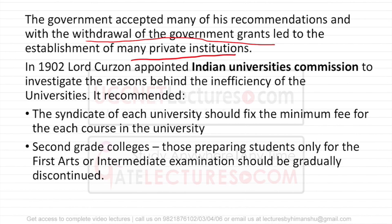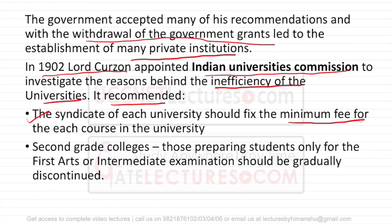In 1902, Lord Curzon appointed the Indian Universities Commission because he was not satisfied with the working of universities — the reason was to improve their efficiency. This commission recommended that the syndicate of each university should fix minimum fees for each course, so fees would be standardized rather than changing year to year. It also recommended that second-grade colleges, which only prepared students for fine arts or intermediate examinations, should be discontinued.